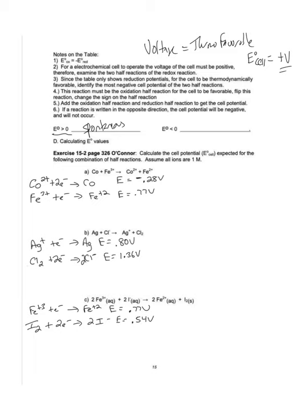When I close the loop, attach the alligator clips, and have the salt bridge like in the last homework, the voltmeter will immediately register a positive voltage and current is flowing from the anode to the cathode. If it's negative, it is not spontaneous — it will not occur, no current is flowing, it is not thermodynamically favorable, and the cell will not operate.